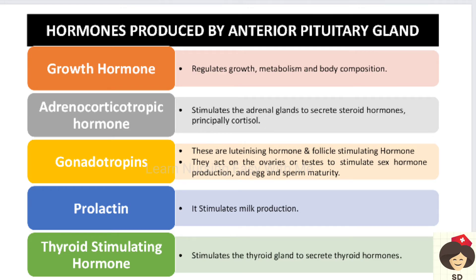Coming to the anterior pituitary gland secreting hormones: first is growth hormone, which regulates growth, metabolism, and body composition. Adrenocorticotropic hormone stimulates the adrenal gland to secrete steroid hormones responsible for maintaining glucose and electrolyte balance. Gonadotrophins — luteinizing hormone and follicle stimulating hormone — are sex hormones responsible for maturation of the ovum and sperm.